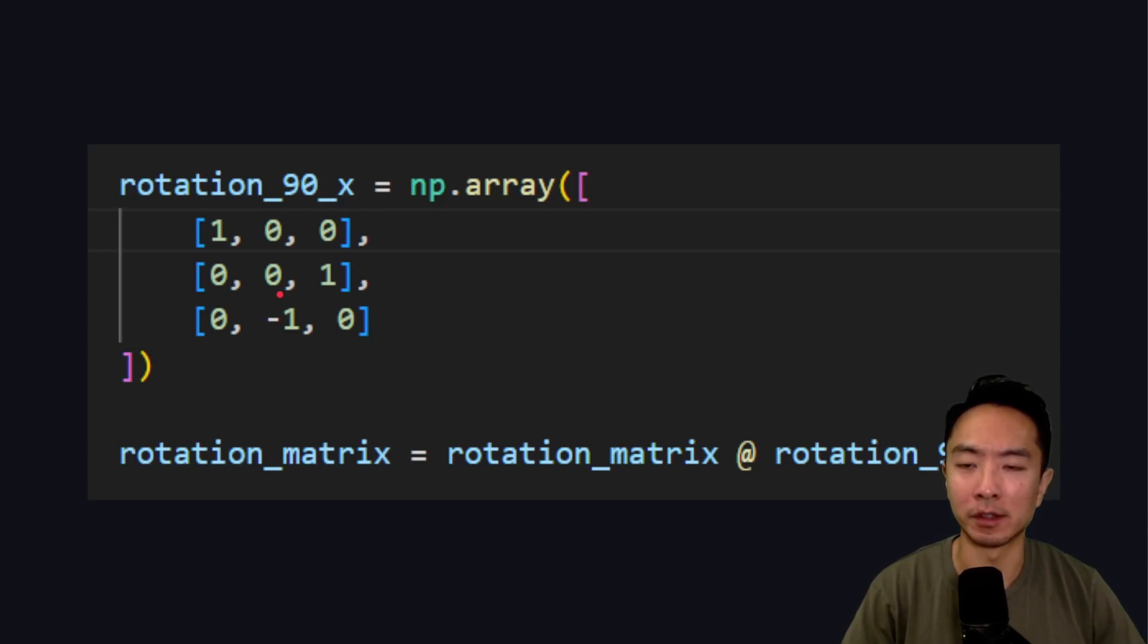You can see here in order to do this in our code, we need to apply the rotation matrix and take that, multiply it by our original rotation matrix to get our new rotation matrix. And then we'll be using that to do our transformations.